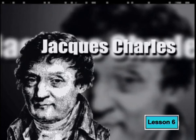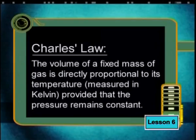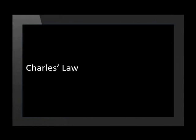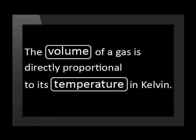This relationship is stated in Charles' Law, which says that the volume of a fixed mass of gas is directly proportional to its temperature measured in Kelvin, provided that the pressure remains constant. This is the answer to our focus question: How does the temperature of a gas affect its volume? Charles' Law can be written more simply as: the volume of a gas is directly proportional to its temperature in Kelvin. We write this mathematically as: Volume ∝ Temperature. This direct proportion causes a graph of volume against temperature to be a straight line.